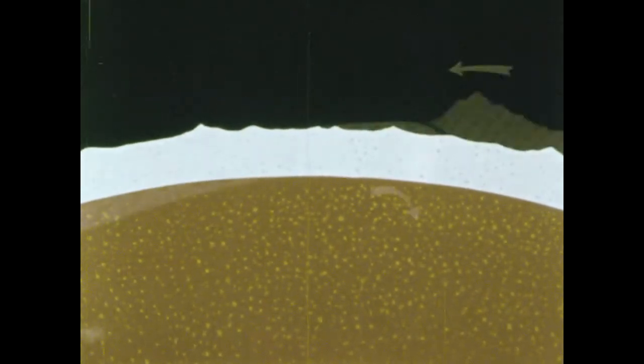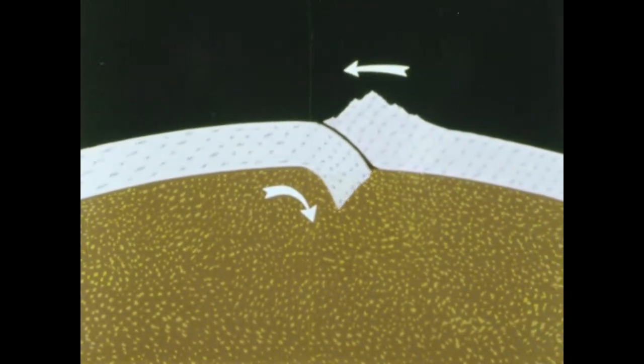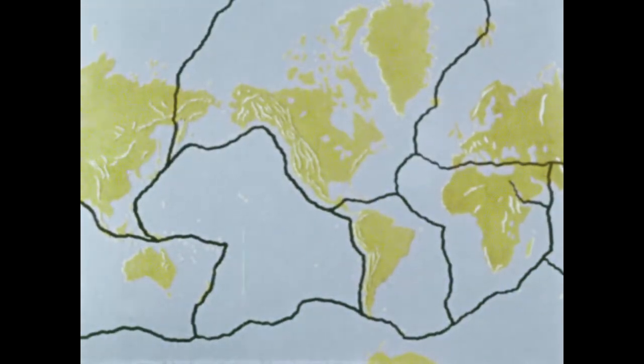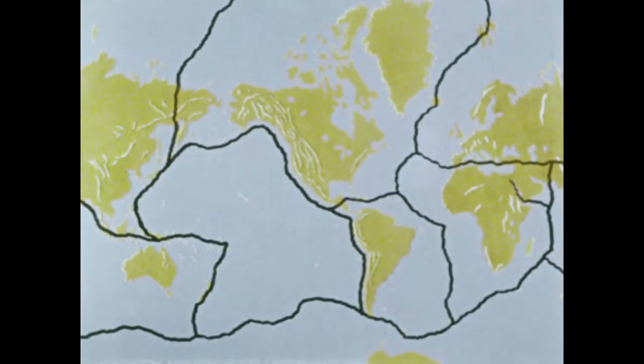In other places, one plate overrides the other and pushes it down into the earth's mantle. The black lines in this map show where scientists believe the earth's crust is divided into plates.